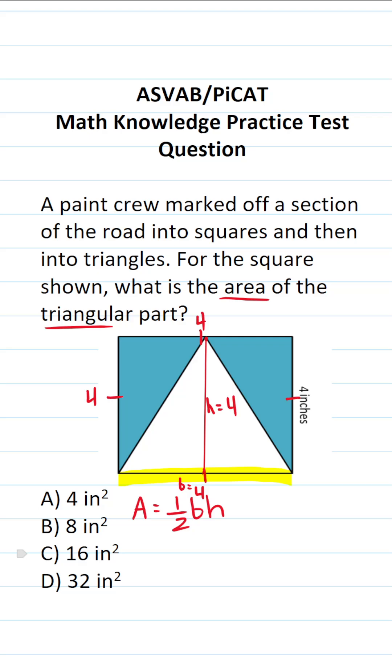So now that we know those two values, we can go ahead and plug them in. This becomes one-half times base, which is four inches, times height, which is four inches. One-half times four times four is 16, so this is one-half of 16. One-half of 16 is eight. So the area of this triangle inside this square is eight square inches.